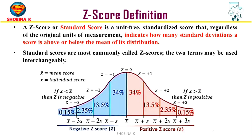Now let's see the definition of z-score. A z-score is also known as a standard score, which is a unit-free standardized metric that quantifies how many standard deviations a particular score is above or below the mean of its distribution. A z-score or z-value is the number of standard deviations a score or value is away from the mean.